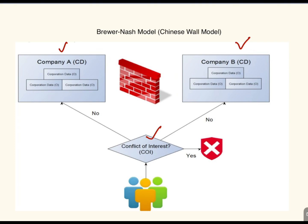In this image, the firewall separates company A and company B. If a user accesses company A's data, they are now restricted from accessing company B's data, to prevent conflict of interest. If no conflict of interest exists, access is granted.